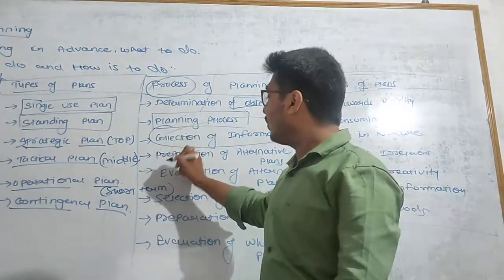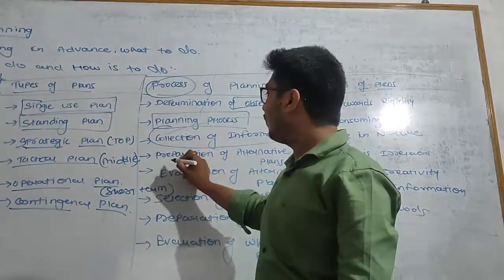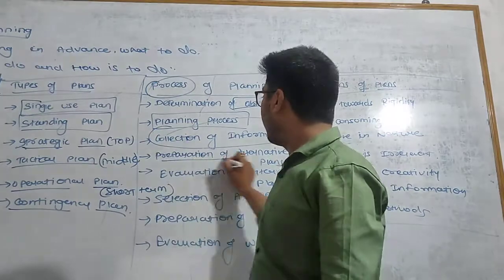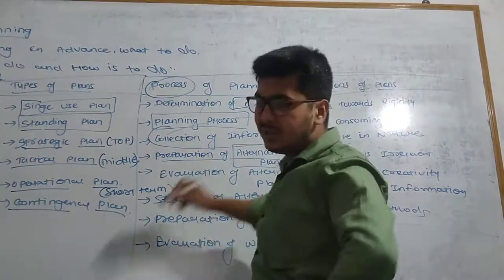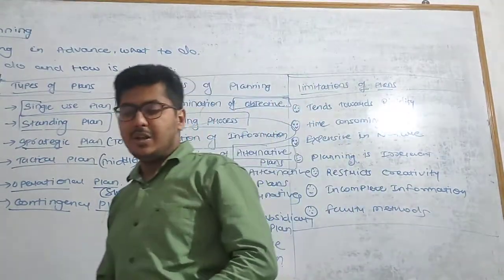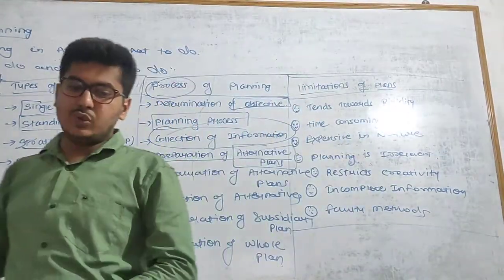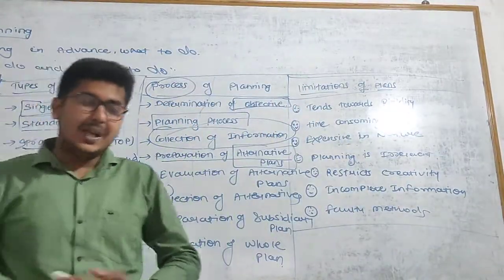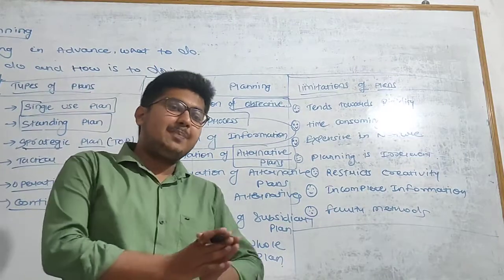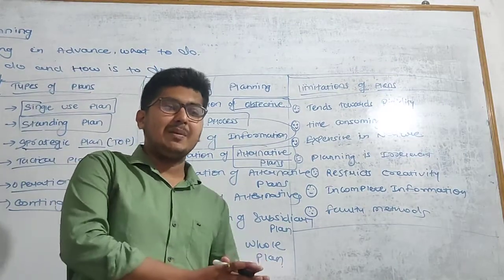Then after collecting the information, they will prepare the alternative plans. What is the meaning of alternative plans? Alternative plans are those plans — Plan A, Plan B, Plan C — different options that managers can choose from.